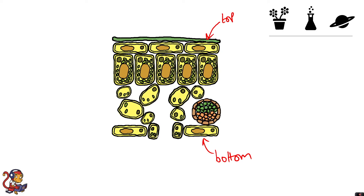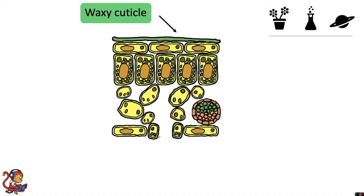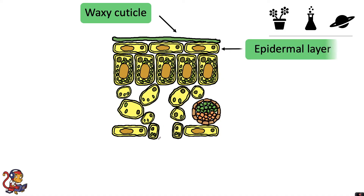Let's look at what the different parts of the leaf are called. The top part is called the waxy cuticle — if you feel the top of a leaf you'll feel that waxy coating on many leaves. The layer underneath is called the epidermal layer, and you'll see the epidermal layer covers the top and the bottom of the leaf.